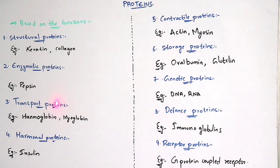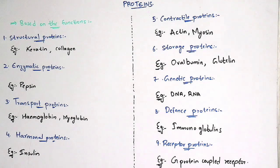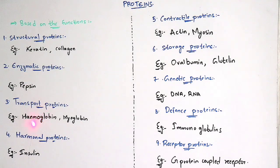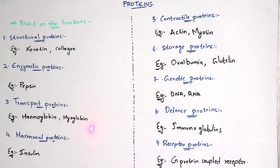Transport proteins mainly play a major role in the transport of carbon dioxide and oxygen. Examples are hemoglobin and myoglobin. Hemoglobin takes a major role in transport of carbon dioxide and oxygen, and myoglobin plays a major role in transport of carbon monoxide (CO).